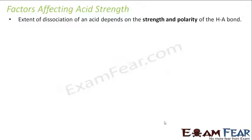The extent of dissociation of an acid depends on the strength and polarity of the H-A bond. For example, in HCl, this H-Cl bond strength and polarity will determine how much of this HCl will dissociate into H+ and Cl-.